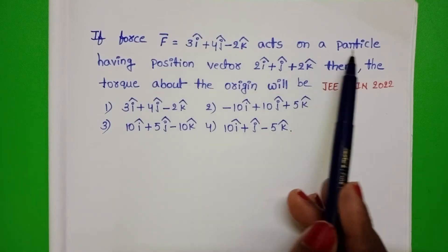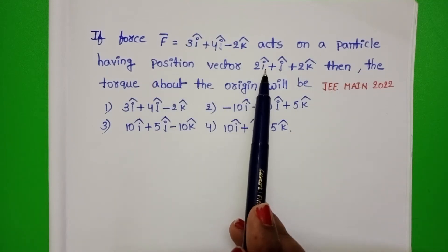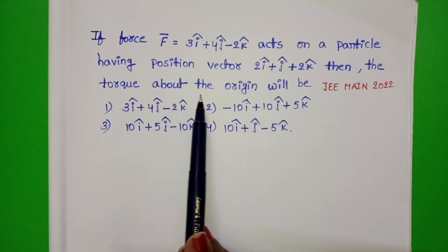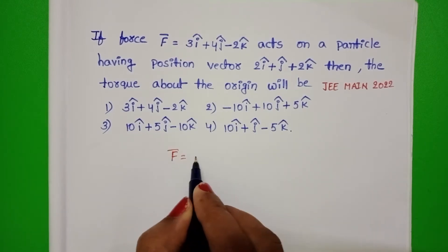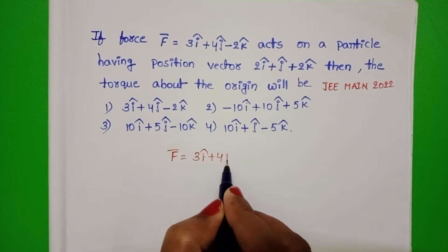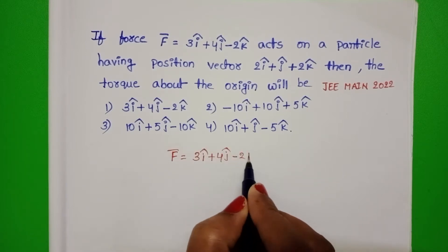If a force acts on a particle having position vector, then the torque about the origin will be given. Force F bar is equals to 3 I cap plus 4 J cap minus 2 K cap Newton.